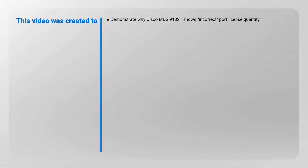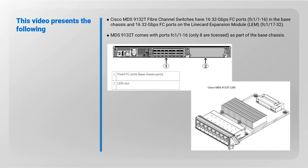This video was created to demonstrate why the Cisco MDS 9132T shows incorrect port license quantity. The Cisco MDS 9132T fiber channel switch has 16 32 Gbps FC ports from interfaces FC1 to FC16 in the base chassis, and 16 32 Gbps FC ports on the line card expansion module from interfaces FC17 to FC32.